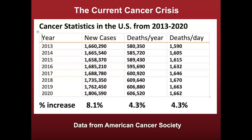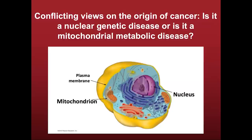One has to ask the question: what is largely responsible for the failure to prevent or manage cancer? In my mind, it has to do with the view of how we understand cancer. Is cancer a nuclear genetic disease, or is it a mitochondrial metabolic disease? I'll be discussing information that shows that cancer is primarily a mitochondrial metabolic disease.